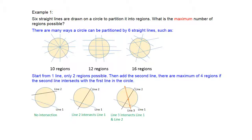Now let's extend that to three lines and go step by step to see what happens when we introduce the third line. As line three intersects with line one, it creates one extra partition. Continuing to draw this line, when it reaches line two, it partitions another region. And as this line exits the circle, it adds one more region. So for line three, if we keep the maximum number of intersections with existing lines, we create three more regions.